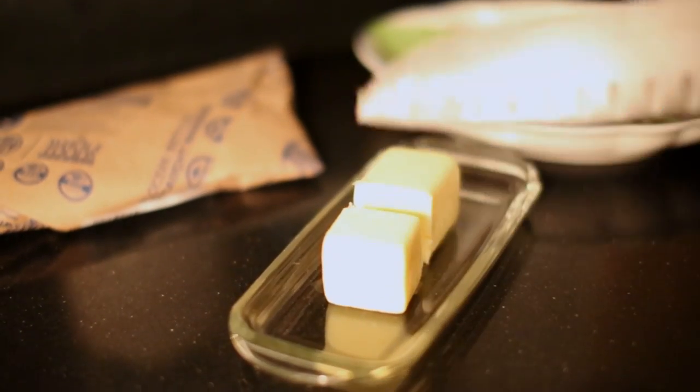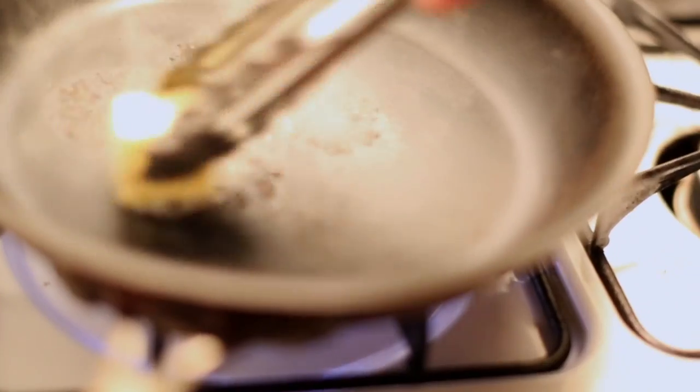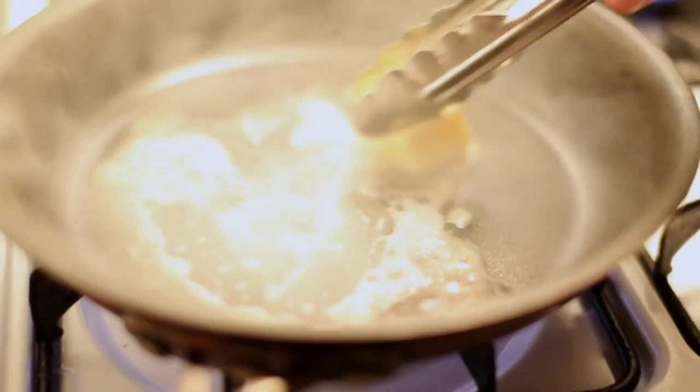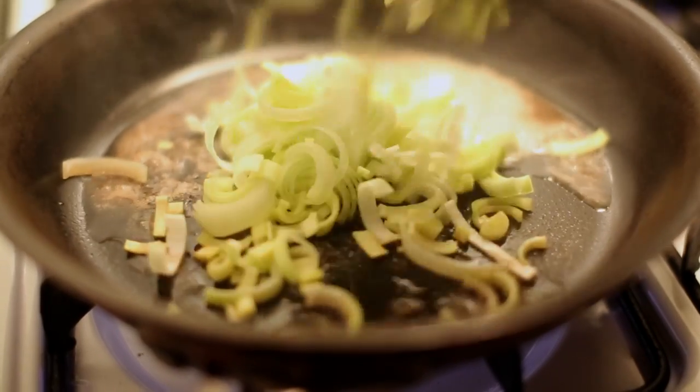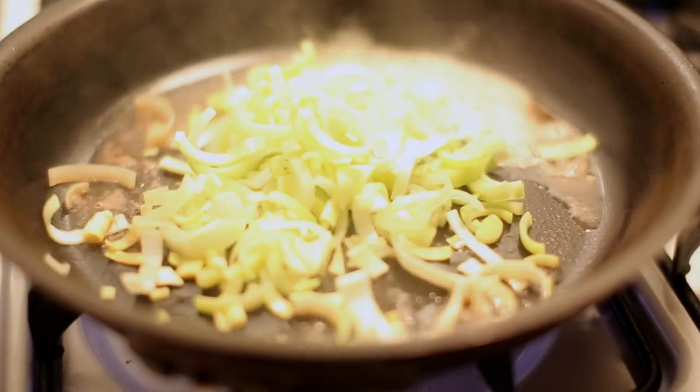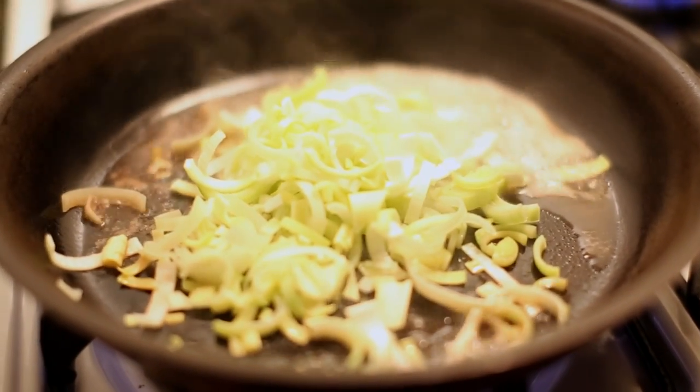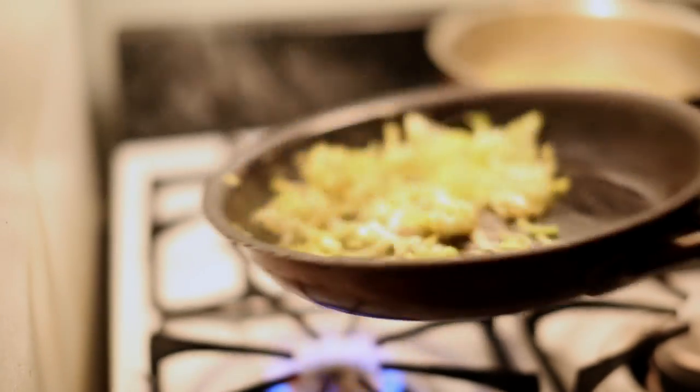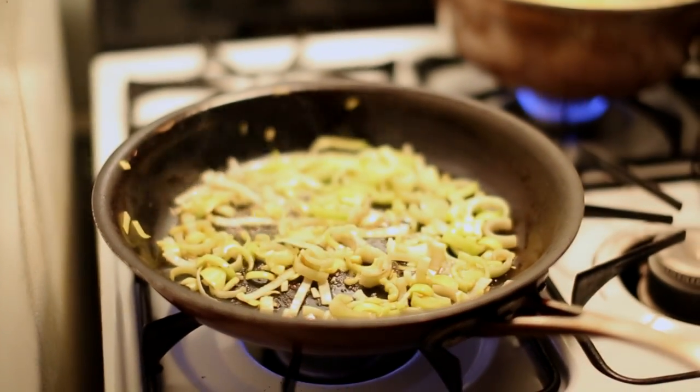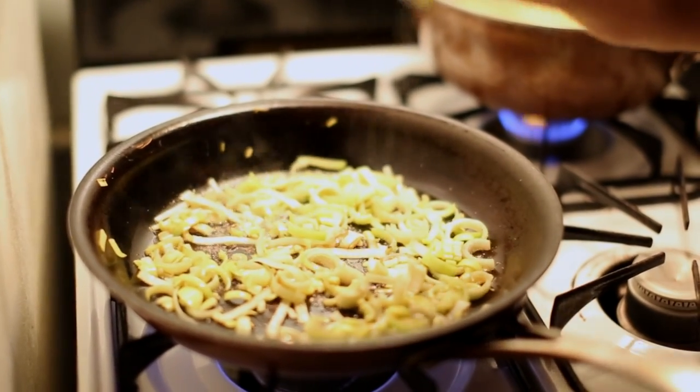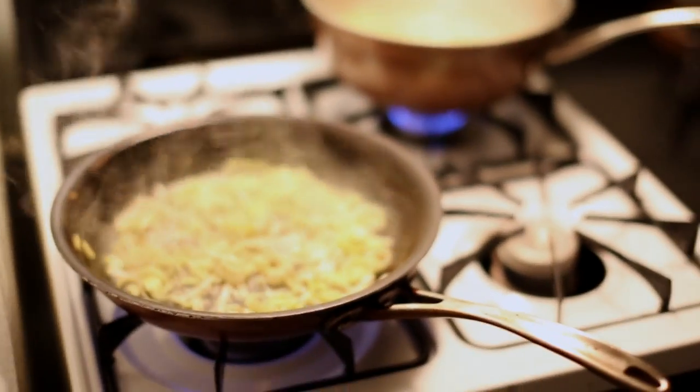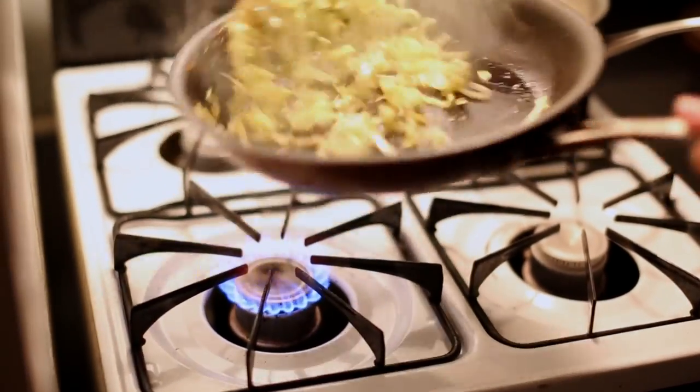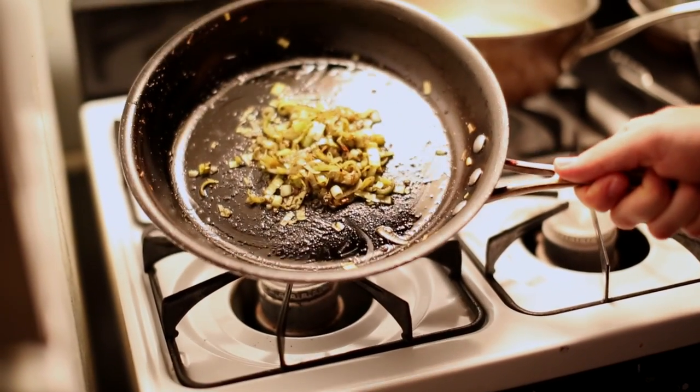After the lemons are done, add about a quarter stick of butter to the pan and toss in the onion. Add a little sugar and a little seasoning salt. So this is kind of how you want it to look when the onions are ready.